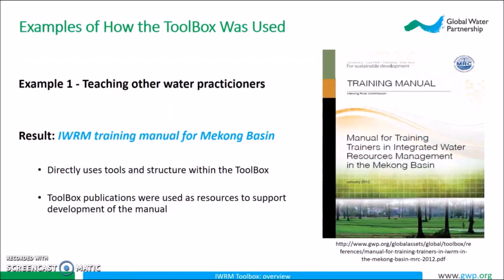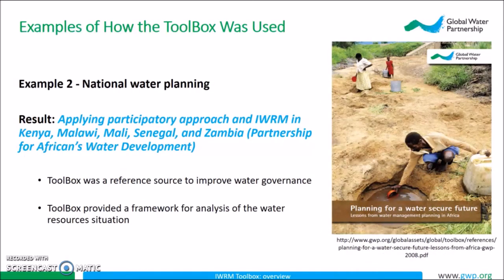Finally, let's look at some ways that the toolbox has been used in the past. The first example is from the Mekong Basin, where it was identified that there was a lack of trainers and capacity on IWRM. The GWP toolbox was used to develop a training manual that can be used to train trainers. The manual directly uses tools and the structure of the toolbox to help teach IWRM, and the resources and publications in the toolbox were used as resources to support the manual development. Here's another example of how the toolbox was used by the partnership for water development in Africa. IWRM and the participatory process was applied in five countries in the partnership by using the toolbox as a reference and a guide. Many of the management instrument tools were also used as a framework to analyze and understand the current water resource situation in each country.